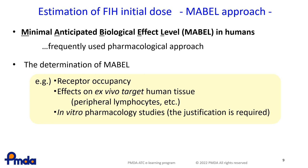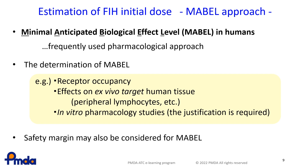Based on MABEL, the dose range showing the minimal efficacy is determined by the estimated blood levels of the pharmaceutical agent in humans. The doses within the range are considered as the starting doses in FIH trials. If there are any concerns about adjusting models showing pharmacological effects to humans, a safety margin may be considered for MABEL.